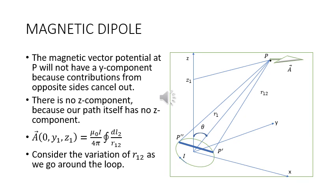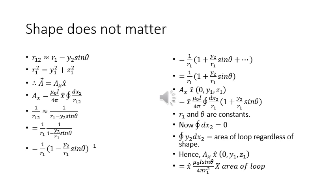We consider the variation of r₁₂ as we go around the loop. r₁₂ is approximately equal to r₁ minus y₂ sin θ, where r₁ squared equals y₁ squared plus z₁ squared. A equals Ax unit vector x, where Ax equals μ₀I upon 4π times the integral of dx₂ upon r₁₂. Then 1/r₁₂ is approximately equal to 1/(r₁ minus y₂ sin θ), which equals (1/r₁)(1 minus y₂/r₁ sin θ)^(−1).